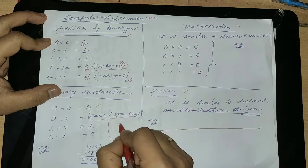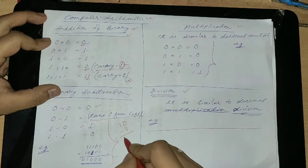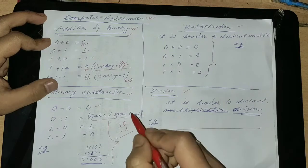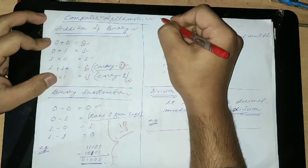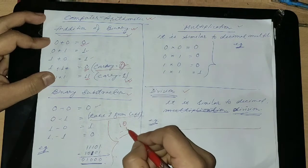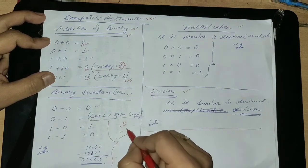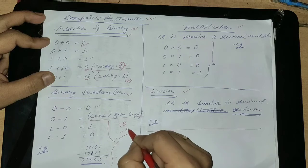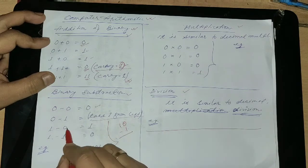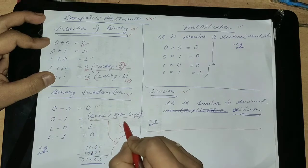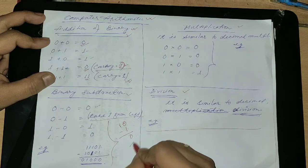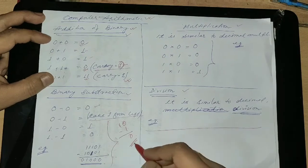1 minus 0 is equal to 1, and 1 minus 1 is equal to 0. Here, if it's 1, 0 — now you see, this 1 will come here. So when 1, 0 — that means 1 and 0 — get subtracted in binary system, not in the mathematical way. Whenever you subtract 1, 0 minus 1, this left hand side 1 will come here. So 1 minus 1 is equal to 0.